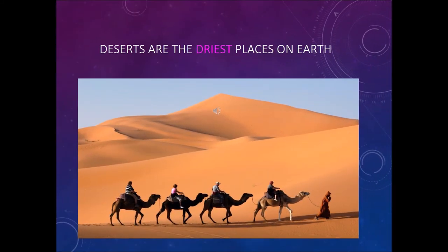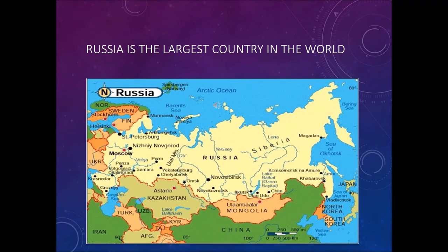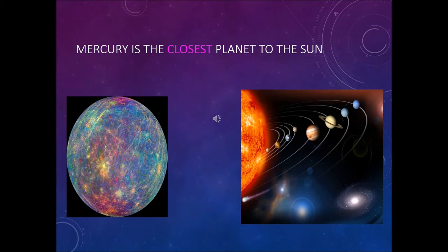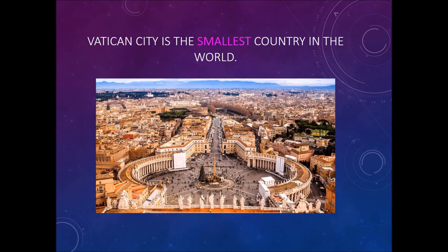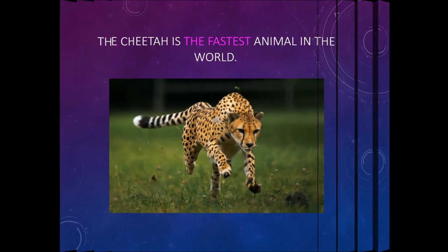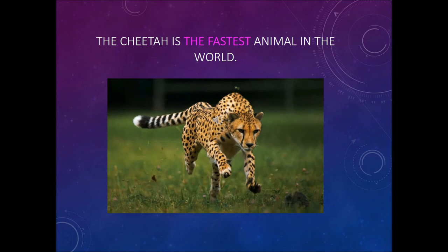Deserts are the driest places on earth. Russia is the largest country in the world. Mercury is the closest planet to the sun. Vatican City is the smallest country in the world. Diamonds are the hardest material in the world. The cheetah is the fastest animal in the world.